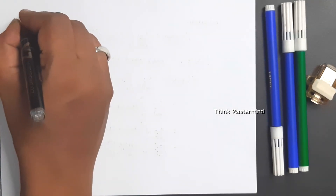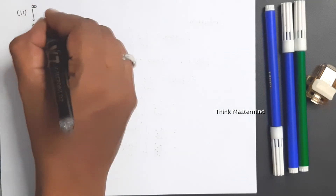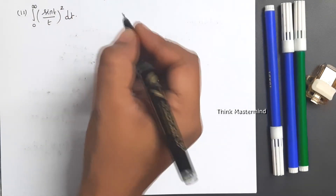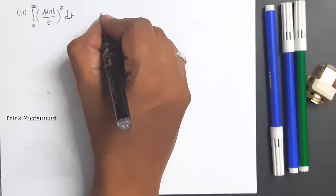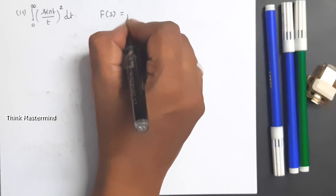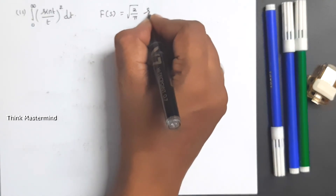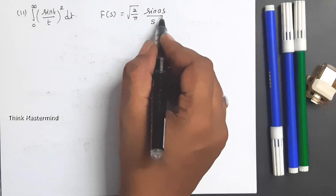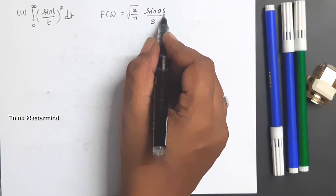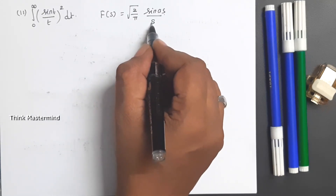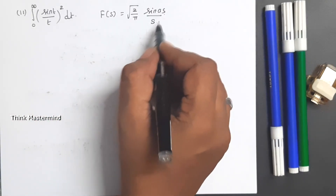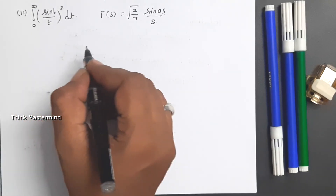Now for deduction part 2: find ∫₀^∞ (sin(t)/t)² dt. Comparing with the Fourier transform result F(s) = √(2/π)·sin(as)/s, we have a sin(as)/s term but we need it squared. So we use Parseval's identity: ∫_{−∞}^{∞} |f(x)|² dx = ∫_{−∞}^{∞} |F(s)|² ds.